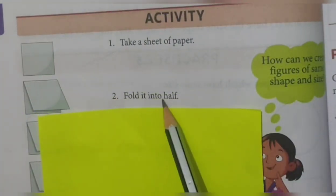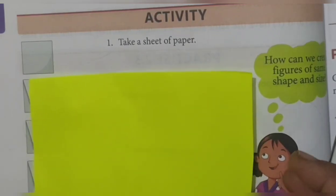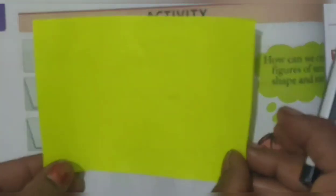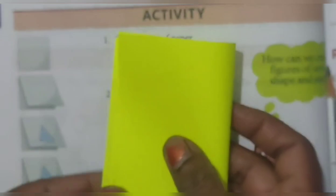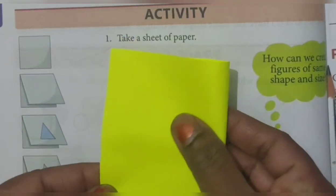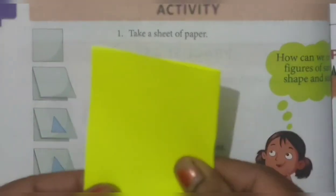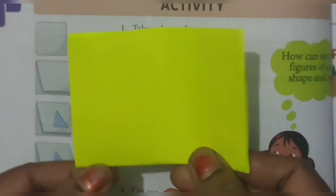Now see, second step: fold it into half. That means like this I fold this. See here how I fold this, like this. I fold this in two.